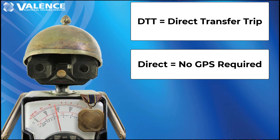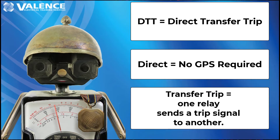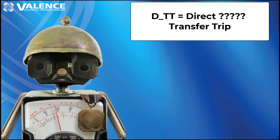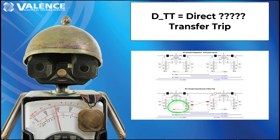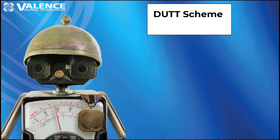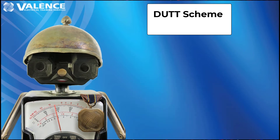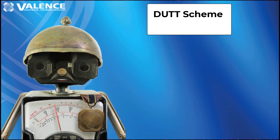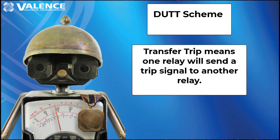Direct tells you that you don't need any fancy GPS or iRig connected equipment to test this scheme. Transfer trip tells you that one relay will send a trip signal to the other. There could be another letter telling you which zone to apply, but it's missing from this acronym, so that means there will be an external signal initiating the transfer trip — like a breaker failure relay or a 52B signal — that will isolate both sides of a line if one breaker operates. For a DUTT scheme, direct means no fancy time-synced test equipment is required on both ends. The U stands for underreaching, so one relay will need to measure a Zone 1 signal to send a trip to the other side, and a relay test set will be required.